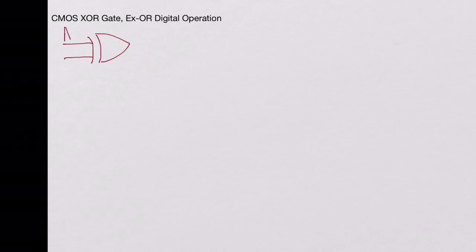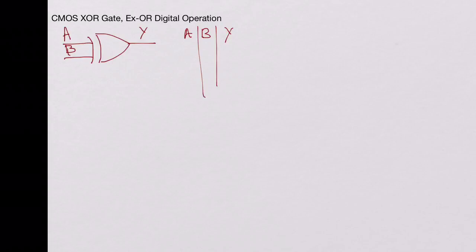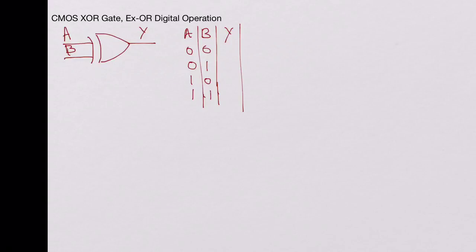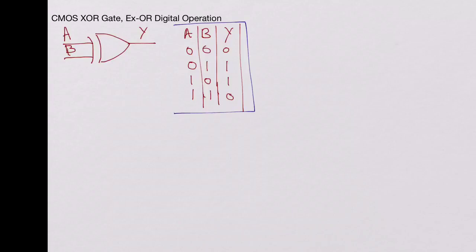If you look at the truth table for the exclusive OR gate or the symbol — let's start with the symbol. Symbolically it's represented like this. We will take the two-input gate with two inputs A and B and the output is Y. So writing the truth table with all four combinations: 00, 01, 10, 11 — the output will be high when both A and B are different. So for 01 and 10 it is high, and low in the other cases. This is the truth table for the exclusive OR gate.